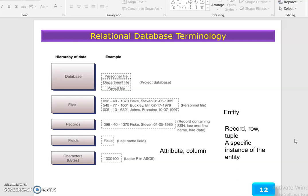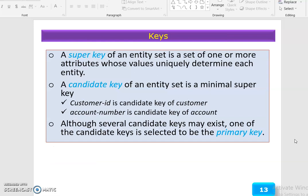Keys: A super key of an entity set is a set of one or more attributes whose values uniquely determine each entity. A candidate key of an entity set is a minimal super key. Customer ID is a candidate key of customer, and account number is a candidate key of account.